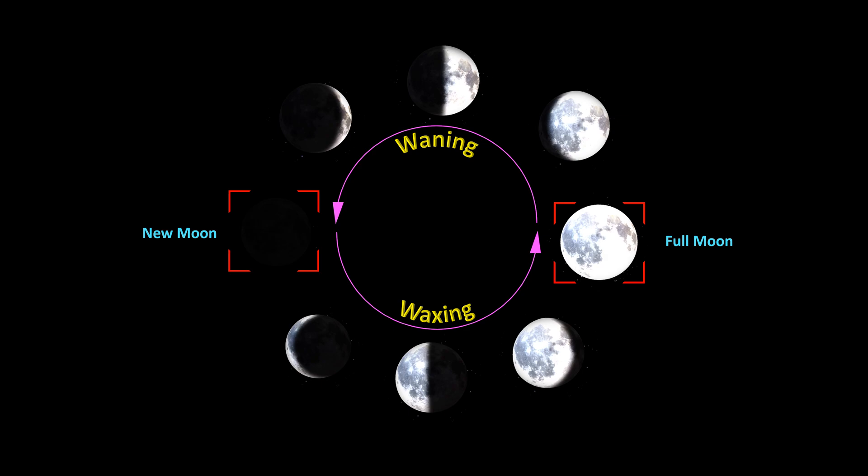The intermediate phase between the new moon to the full moon is known as the first quarter. As the moon completes a quarter of its cycle, in this phase, half the moon is visible from the earth. It takes around a week from the new moon to this phase.